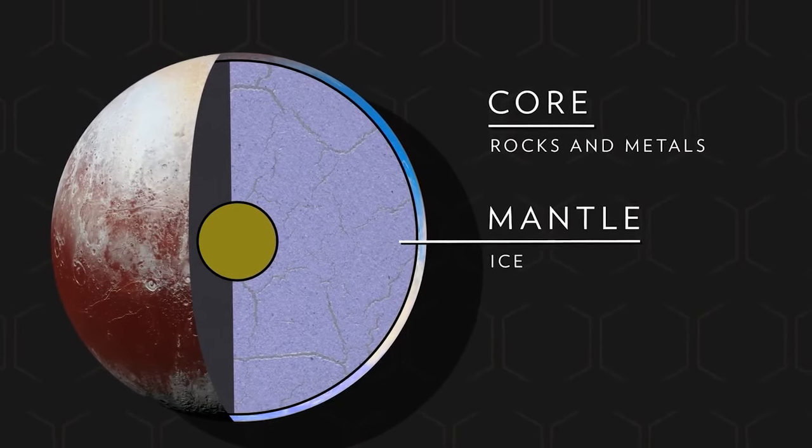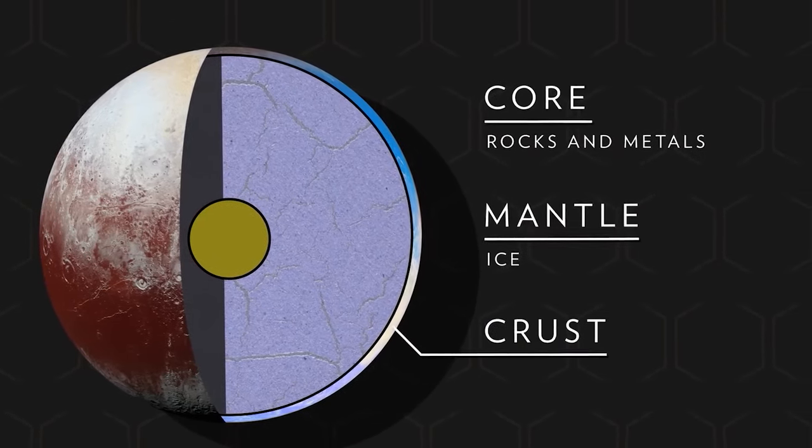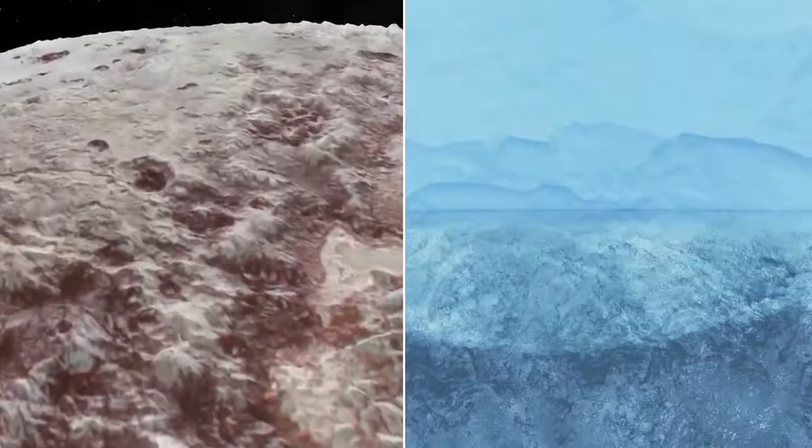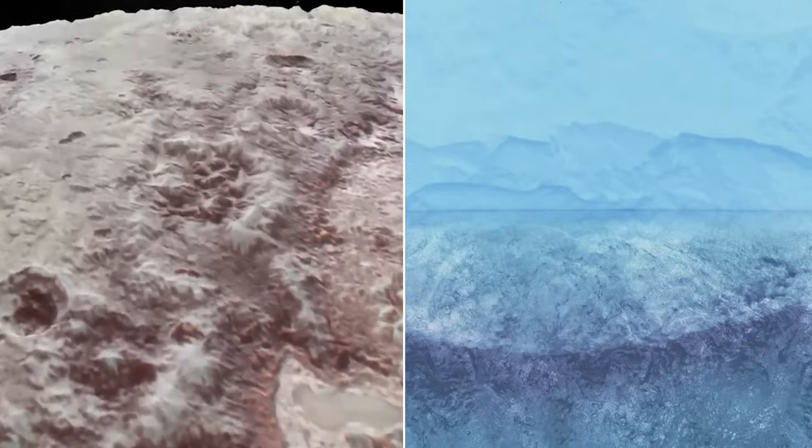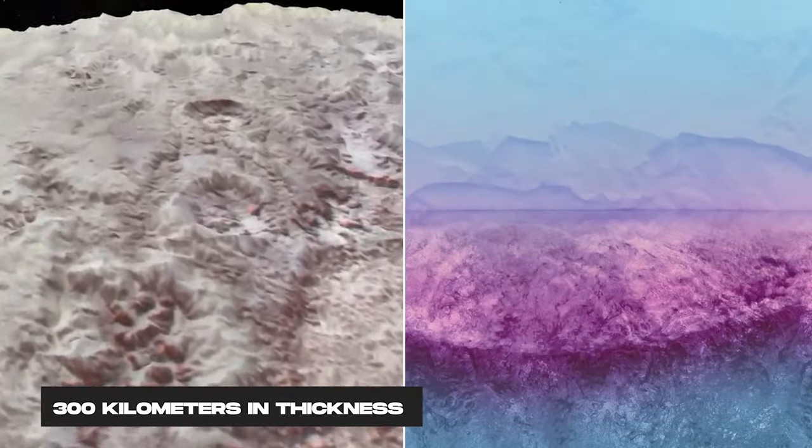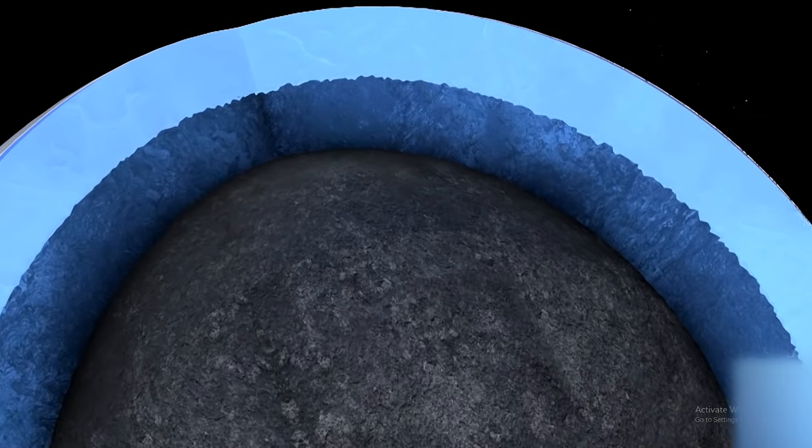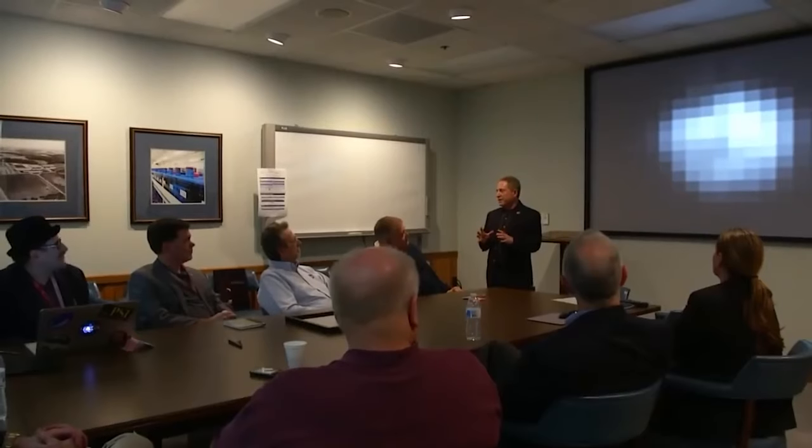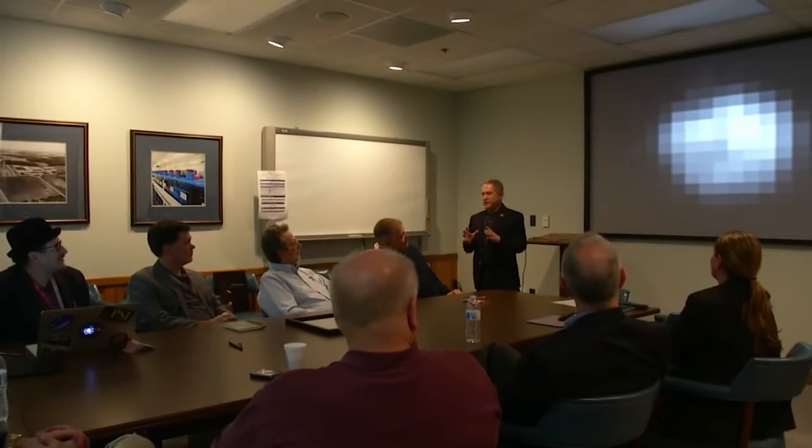This core is composed of a blend of various forms of water, ice, and rock. Enveloping the core is an ice mantle measuring 300 kilometers in thickness, where potential tectonic processes may be underway, although they remain relatively under-researched.